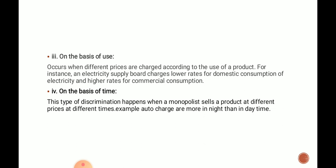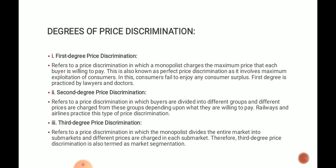The next type is price discrimination on the basis of time. This happens when a monopolist sells a product at different prices at different times. For example, an auto-rickshaw charges more at night than during the day. This is called price discrimination according to time.